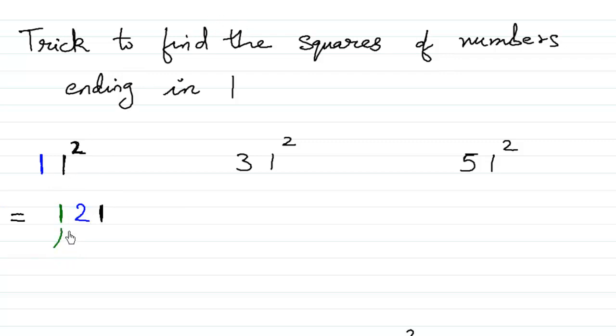So this particular 1 is the square of 1. I mean this 1. And this 2 is the double of that first digit 1. And all these numbers will definitely end in 1.